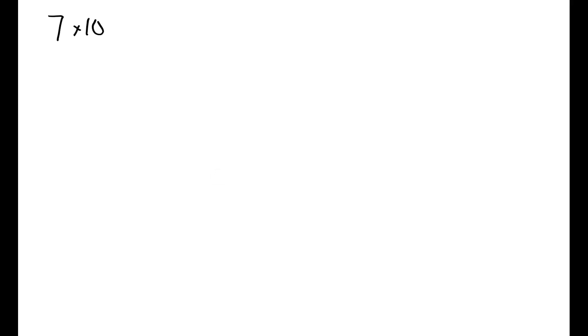As you probably already know, multiplying a number times 10 is pretty easy to do. For example, if I wanted to multiply the number 7 times 10, I know that the product is going to be 70. And if I wanted to multiply the number 48 times 10, I know the product is going to be 480. In other words, multiplying a number times 10 has the effect of putting an extra zero on the end of the number.